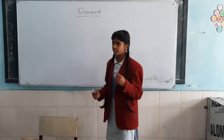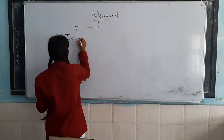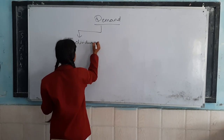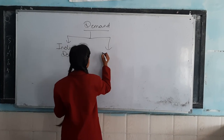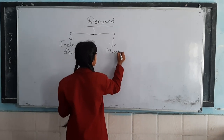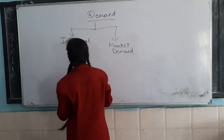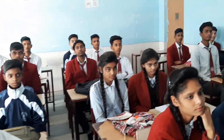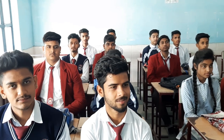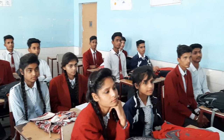And demand is divided into two types. First is individual demand, and second one is market demand. Individual demand refers to a quantity of a commodity which a consumer is willing and able to buy at each given price in a given period of time. And market demand refers to a quantity of a commodity which...